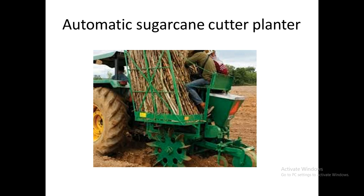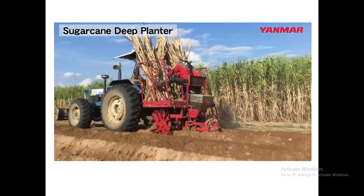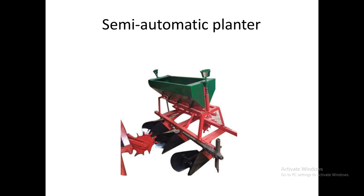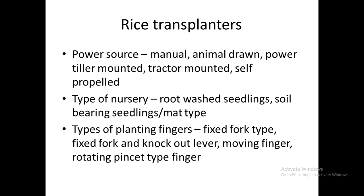In the automatic sugar cane cutter planter, the entire sugar cane is fed as input into the hopper and the machine itself cuts it into small sets and places them in the field. In the semi-automatic planter, pre-cut sugar cane sets are filled into the seed hopper.